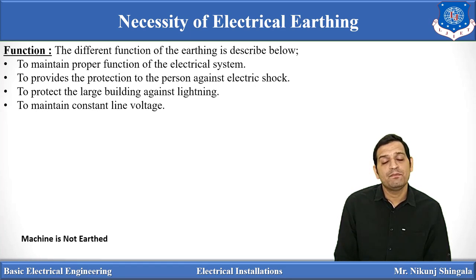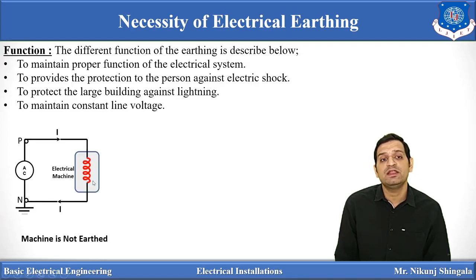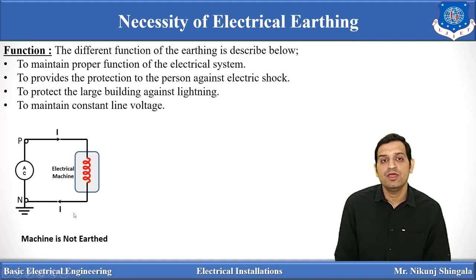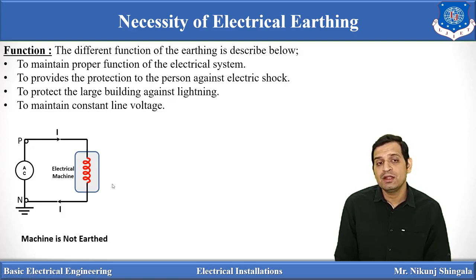To understand the necessity of electrical earthing, let us look at two examples — one system having earthing and one not having earthing. In the first example, the machine is not earthed. One electrical machine is connected across single-phase AC supply. The machine consists of two parts: a conducting part and an outer body, with insulation between them. Insulation loses its property over time and with atmospheric conditions.